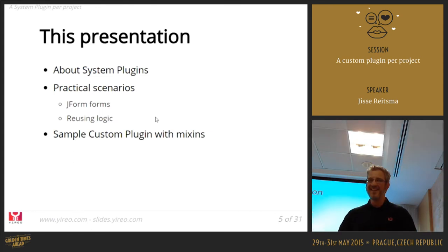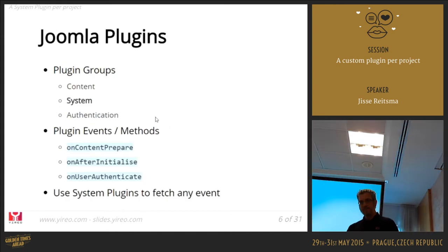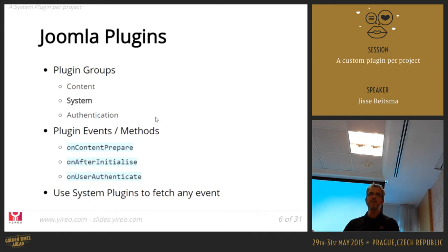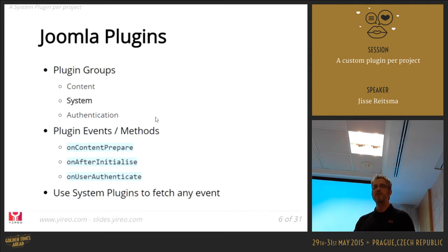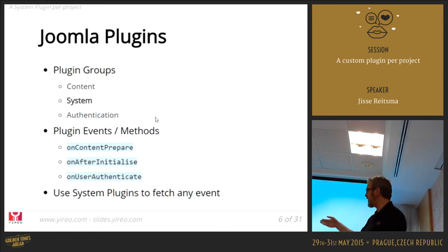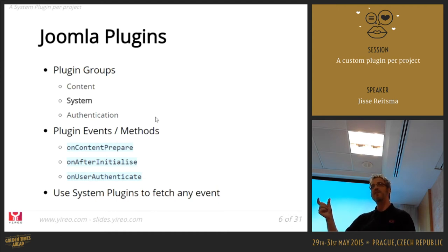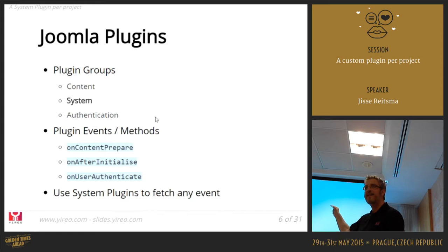Joomla plugins are always grouped into a certain group — content, system, authentication, and so on. A plugin is basically a PHP class, and within that class you define methods following a certain standard. If a method starts with onContentPrepare, the 'onContent' part signals that this is an event and the plugin reacts on it by declaring its method with that name. So within the content group, various things might happen — saving an article, loading from the database, showing a title or body — and every time something happens to that article, Joomla generates an event that a plugin can react to.